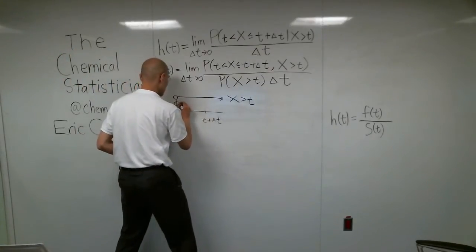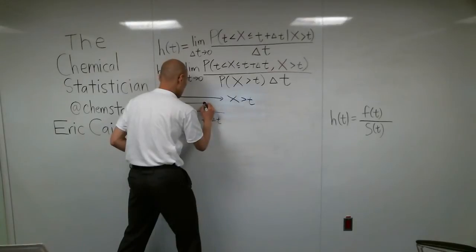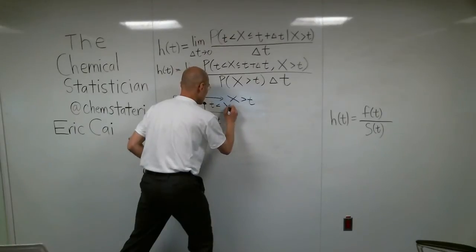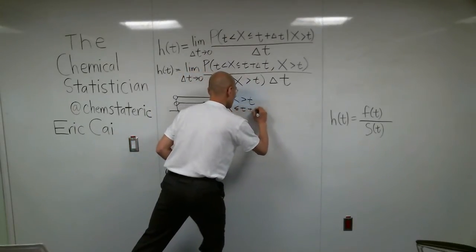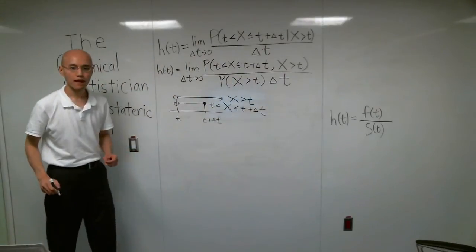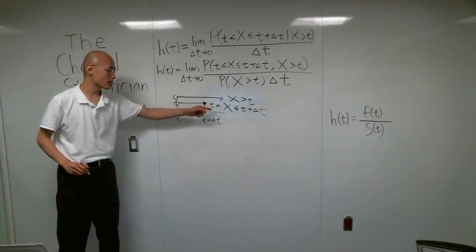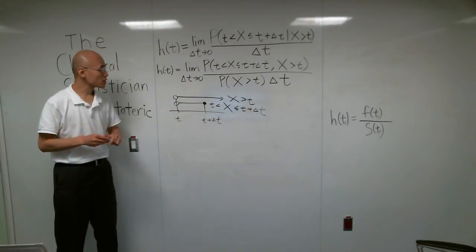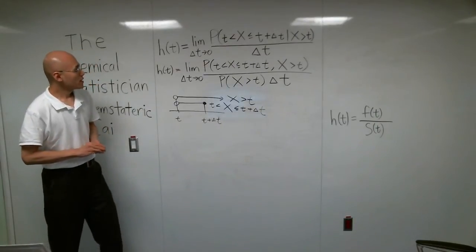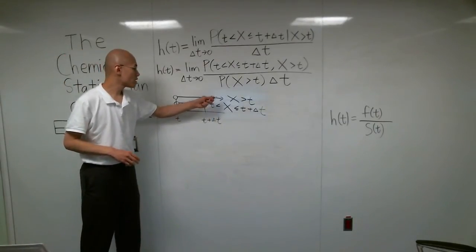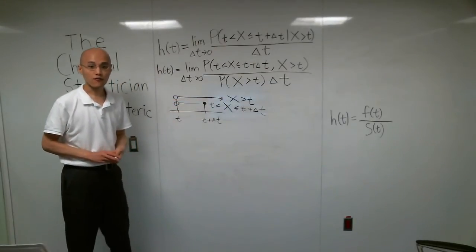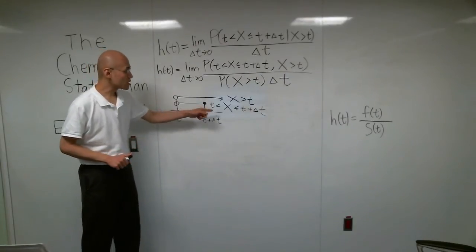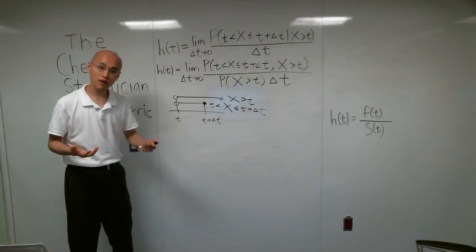Now, here is the event t is less than x, which is less than t plus delta t. Notice how I've used a closed circle to denote that x is less than or equal to t plus delta t. Now, I hope that you can recognize that this event down here is a subset of this event. If you are between t and t plus delta t, if you're bigger than t but less than or equal to t plus delta t, then you're definitely bigger than t.